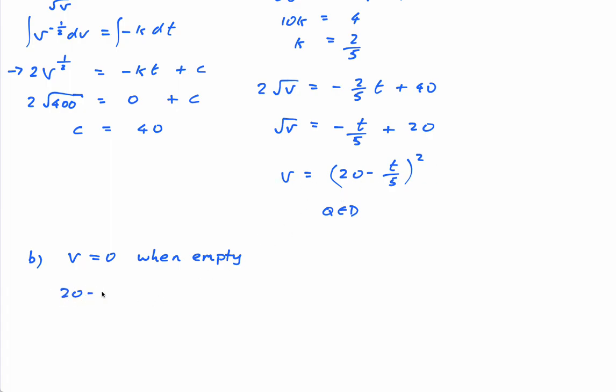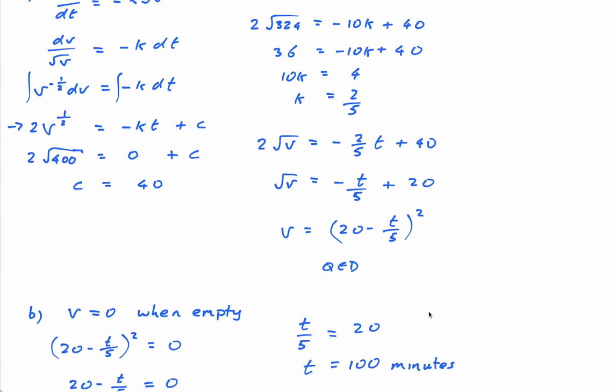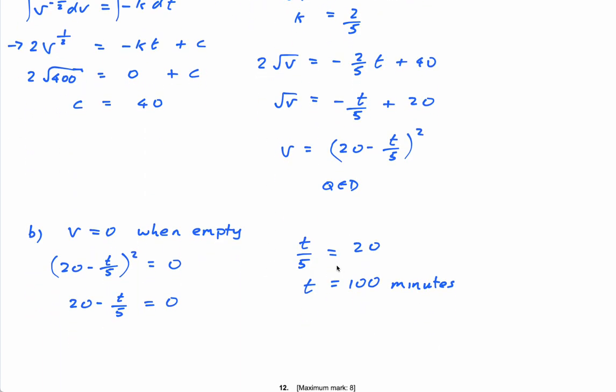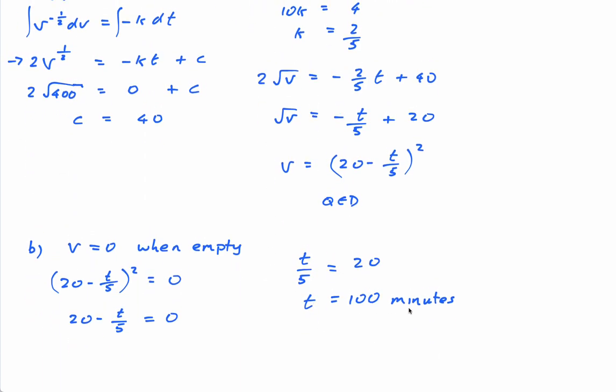So we're going to equate this to 0. So I'm going to have 20 minus T over 5 squared equals 0. That means obviously this is equal to 0. 20 minus T over 5 equals 0. Let's go over here. T over 5 equals 20 and T equals 100. So what was the question? How long did the time taken for the tank to empty? Well, that's your answer. It will take 100 minutes for the tank to empty.